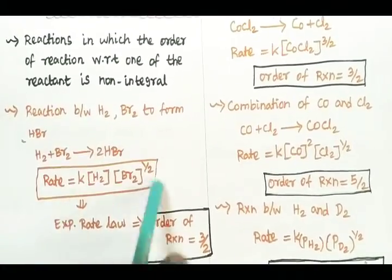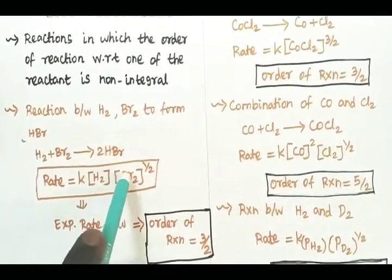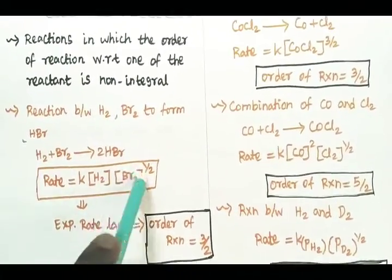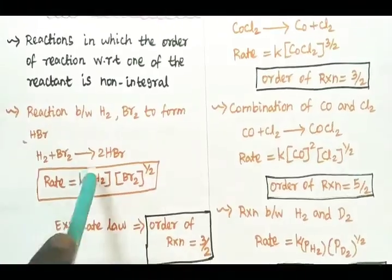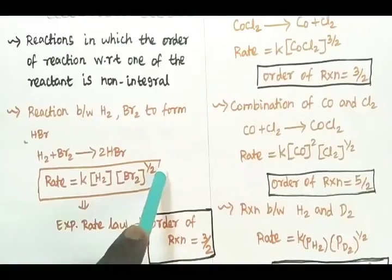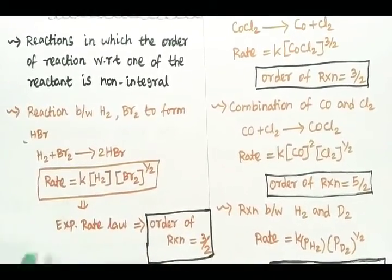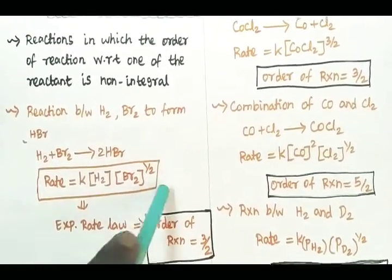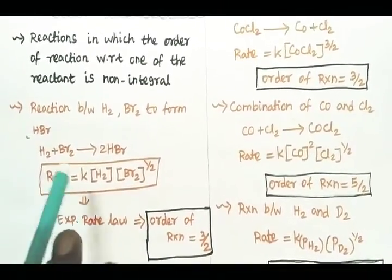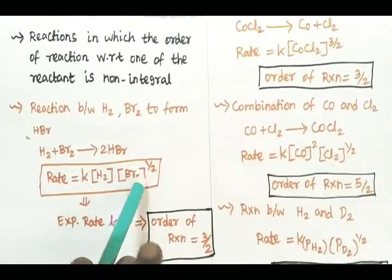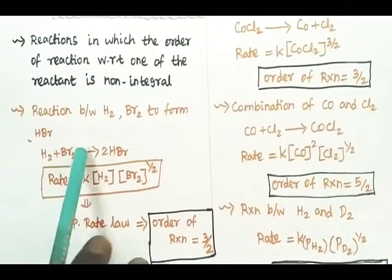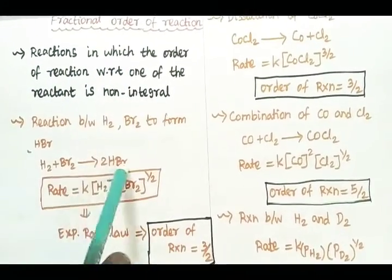The rate is equal to the rate constant into concentration of H₂ into concentration of Br₂ raised to the power 1/2. With respect to bromine, the order of reaction is 1/2. With respect to hydrogen, the order is 1. Overall, the order of reaction is 1 plus 1/2, which equals 3/2. So the overall order of reaction is 3/2 — this is an example of a fractional order reaction.